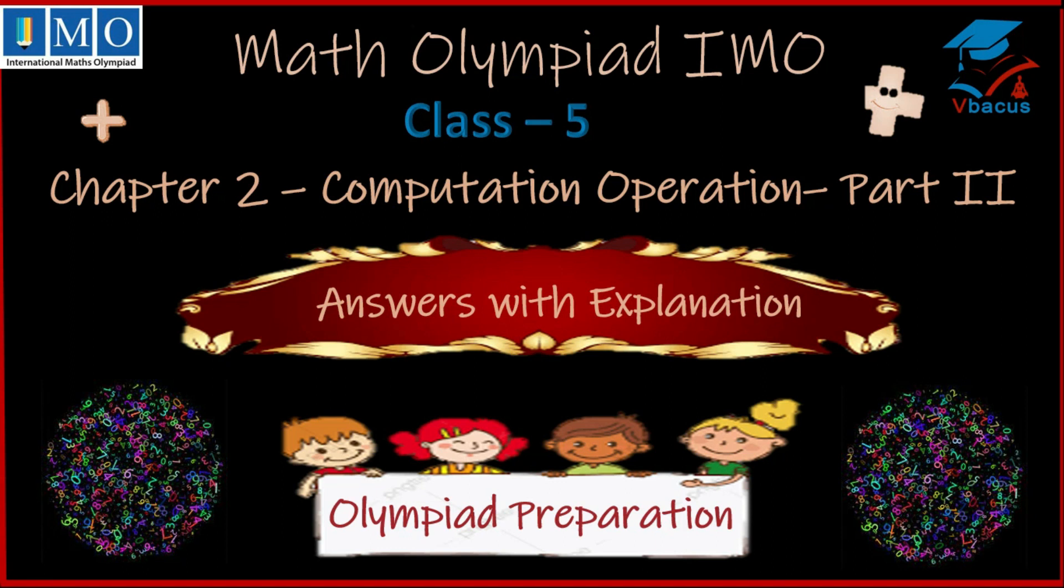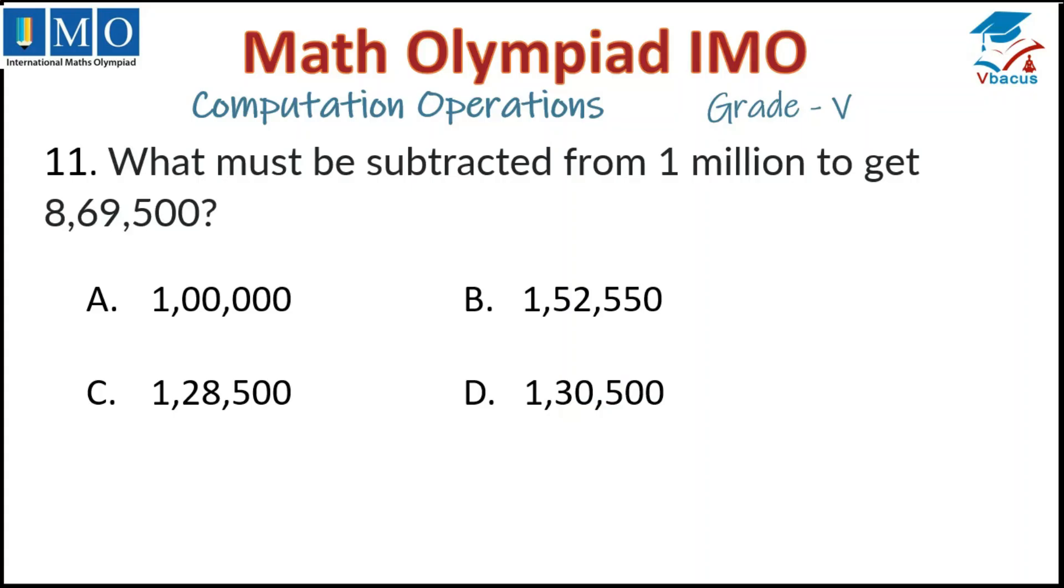Question number 11: What must be subtracted from 1 million to get 869,500? Let us see the solution. 1 million minus 869,500 and you will get 130,500. Where is that option? 130,500, that is option D. So your option D is correct.